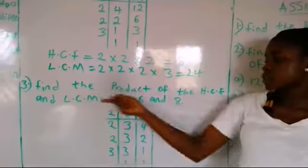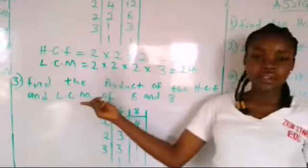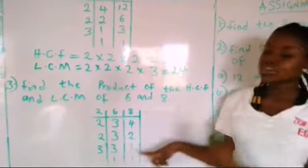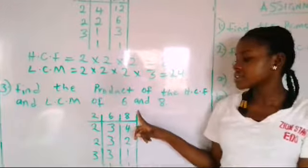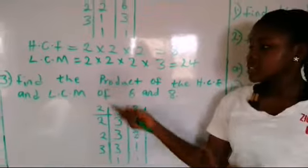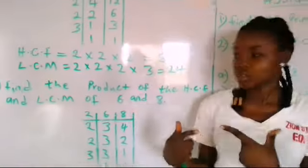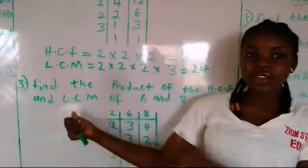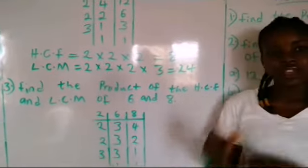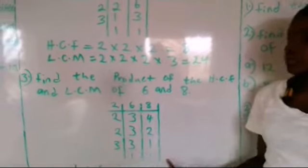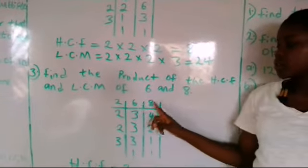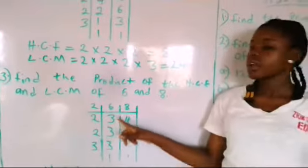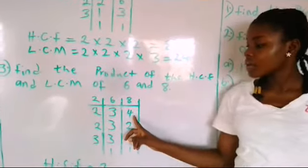We have another question: find the product of the HCF and LCM of 6 and 8. You draw your table and put your 6 and your 8. Product simply means multiplication, so you are going to find the HCF and the LCM and then multiply them together. After arranging 6 and 8, start with the lowest number. 6 divided by 2 gives 3, and 8 divided by 2 gives 4.